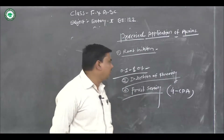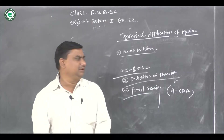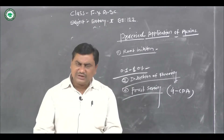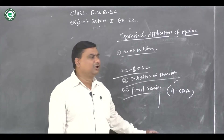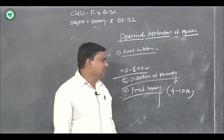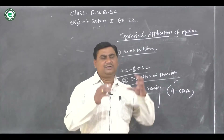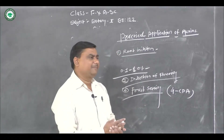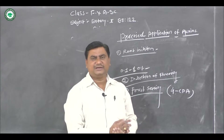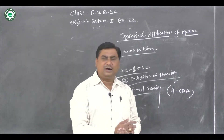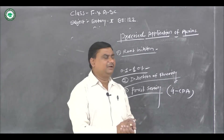Eighth application: tissue and organ culture. Auxin plays an important role in root formation in tissue and organ culture, especially in micropropagation and callus formation. Auxins used include IAA, IBA, NAA, 2,4-D, or auxin in combination with cytokinin.